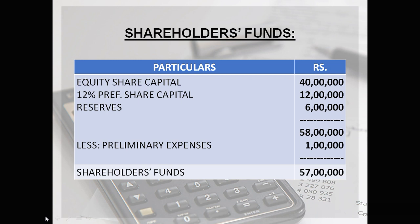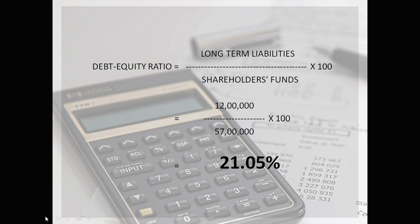Shareholders' funds are calculated as: equity share capital plus preference share capital plus reserves, minus preliminary expenses from the asset side. All figures are from the balance sheet, giving us shareholders' funds of 57 lakhs. Putting these into the formula — long-term liabilities divided by shareholders' funds into 100 — we get 12 lakhs / 57 lakhs × 100 = 21.05%. That is the debt-equity ratio.